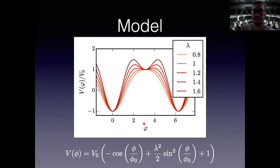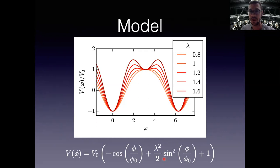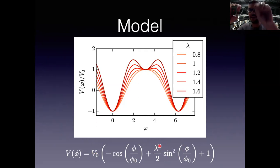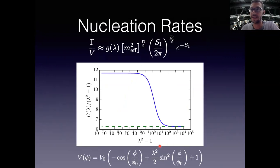For the rest of the talk I'll focus on a specific model: a sine-Gordon model with a perturbing potential. There are three parameters — φ₀, which changes the overall width of the potential; V₀, which changes the overall height; and λ, which changes the actual shape. Roughly, changing φ₀ is like changing ℏ, changing V₀ is like changing the mass of the field, and λ changes the depth of the well.